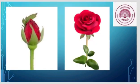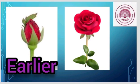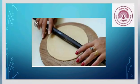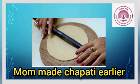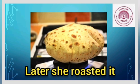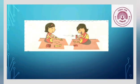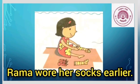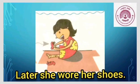Here we can see the rose was a bud earlier and later it becomes a flower. Now look at this picture. Do you see your mother making chapati? What does she do earlier? Mom made the chapati dough earlier, and later she roasted the chapati on the gas, and then the chapati is ready. Students, now tell me what can you see in this picture. Here you can see Rama — she wore her socks earlier and later she wore her shoes.